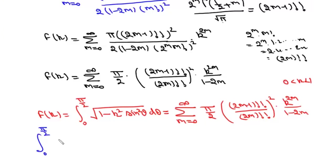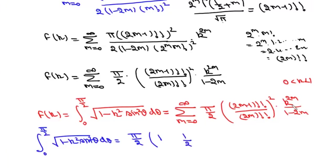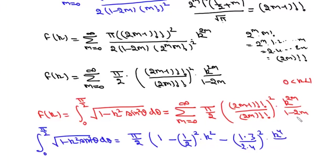In the expanded form, E(k) = ∫₀^(π/2) √(1 − k² sin²θ) dθ equals π/2 times: for m = 0 the term is 1; for m = 1, double factorial 1 is 1 and double factorial 2 is 2, giving −(1/2)² k²; for m = 2, double factorial 3 = 1·3 and double factorial 4 = 2·4, giving −(1·3)²/(2·4)² · k⁴/3; and this series continues to infinity.